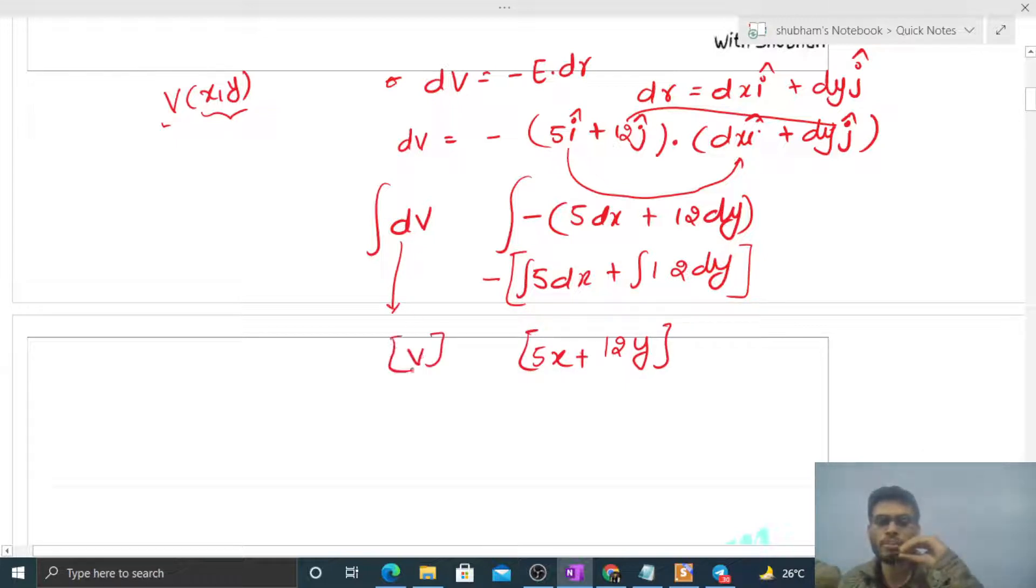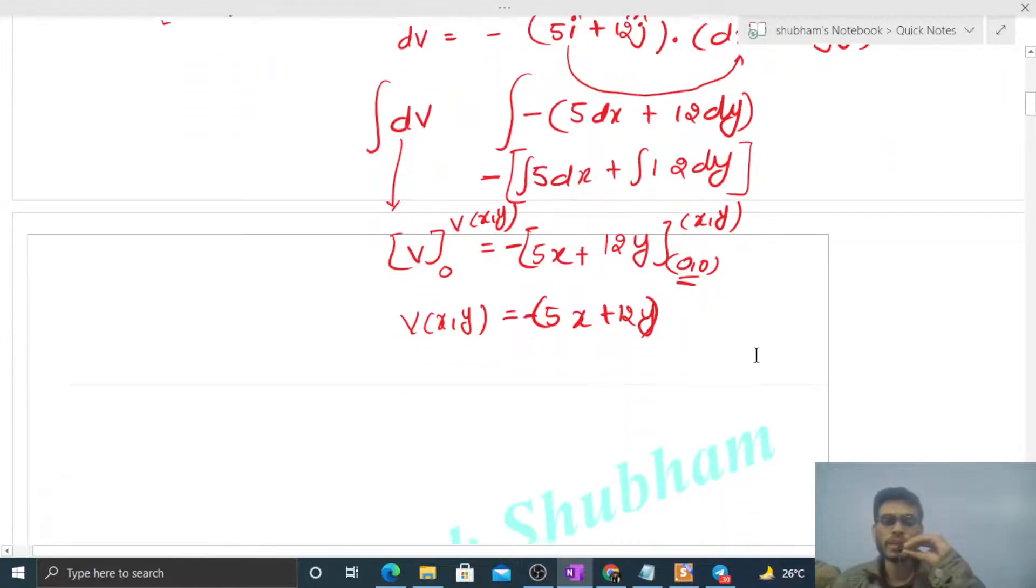Applying boundary conditions: at (0,0) potential is zero, and we want to find potential at general point (x,y). So V(x,y) = -(5x + 12y), since at (0,0) it gives zero as required.